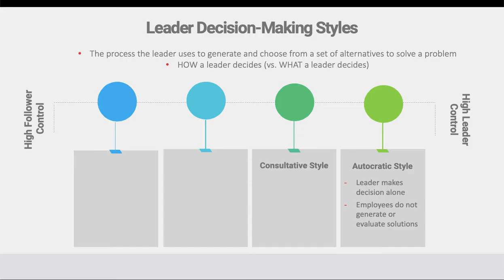There are four different leader decision-making styles on a continuum — some styles give much more control to the leader and some give much more control to followers. The first is called the autocratic style, closest to high leader control. In an autocratic style, the leader makes a decision alone — they do not look for insight or input from employees, no asking for employees' opinions, no inclusion in solution generation. A problem exists and the leader goes about making a decision. The second style is called the consultative style — the leader does make the final decision, but asks employees for their opinions or suggestions to support their decision-making, and then after hearing feedback, ultimately makes the decision.